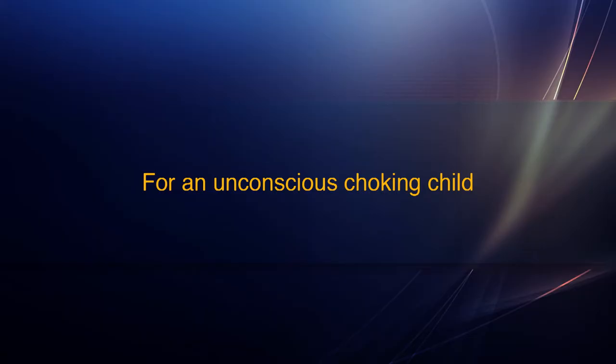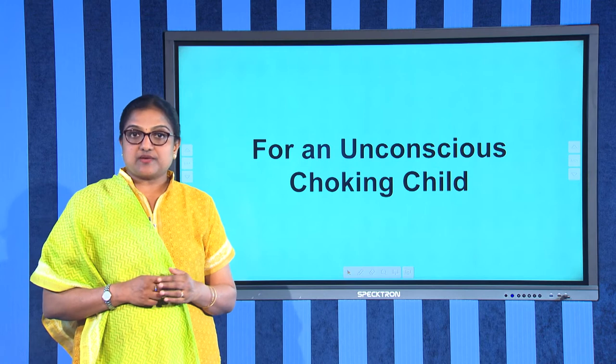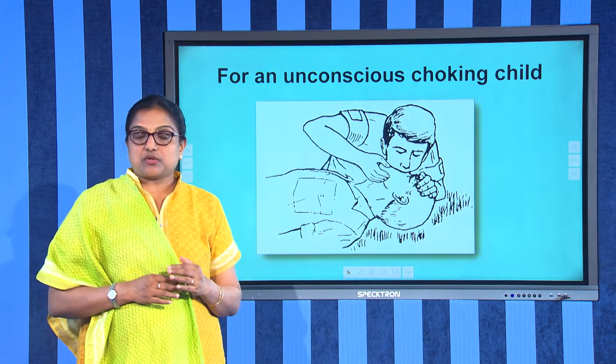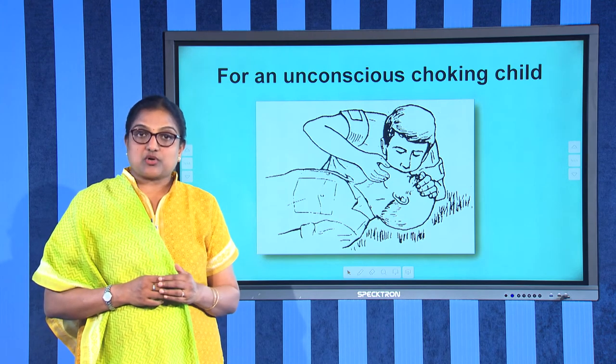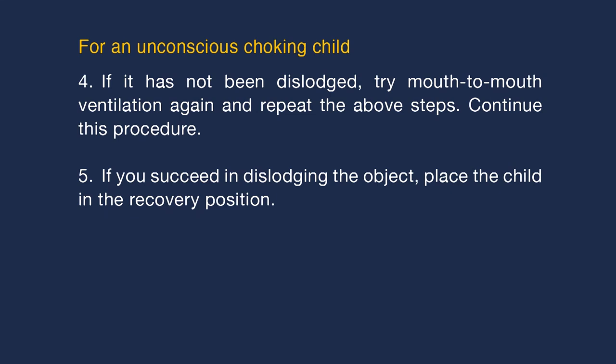For an unconscious choking child: choking will lead to unconsciousness if the obstruction is not quickly removed. You will have to carry out mouth-to-mouth ventilation to try to get air past the blockage. Turn the child on their back, open the airway, and start mouth-to-mouth ventilation. If this doesn't work, put them on the side, do four back slaps, check if the object has been dislodged, and hook it out. Repeat mouth-to-mouth ventilation and continue this procedure. If you succeed in dislodging the object, place the child in the recovery position.